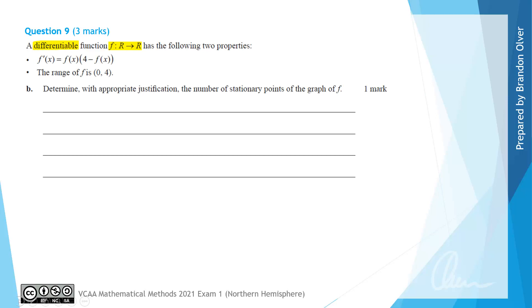For part B, it says determine with appropriate justification, so we need to give some reasoning here, the number of stationary points on the graph of f. So I'm going to dot point out my answer just to keep track of it.